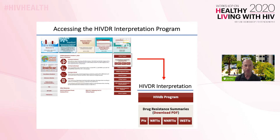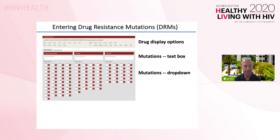Laboratories and researchers performing the actual virus sequencing will use different forms that allow them to enter the raw sequence data. The mutation entry page contains three parts: the lists of drugs to be included in the report, the text boxes for entering mutations, and the optional drop-down lists for entering mutations.